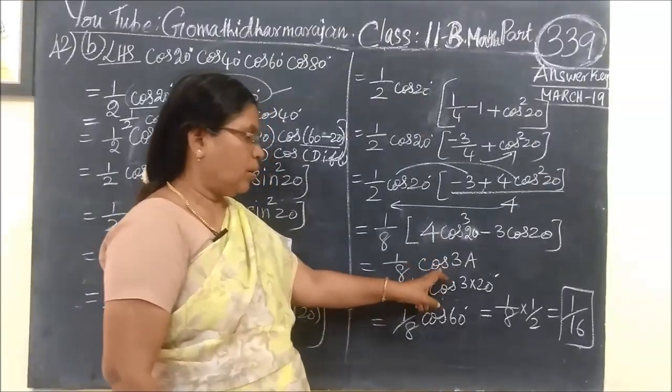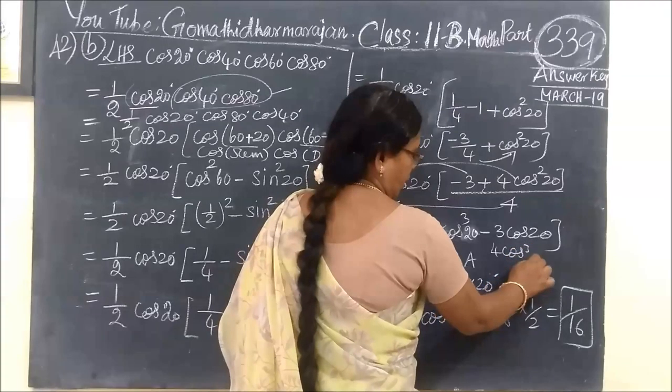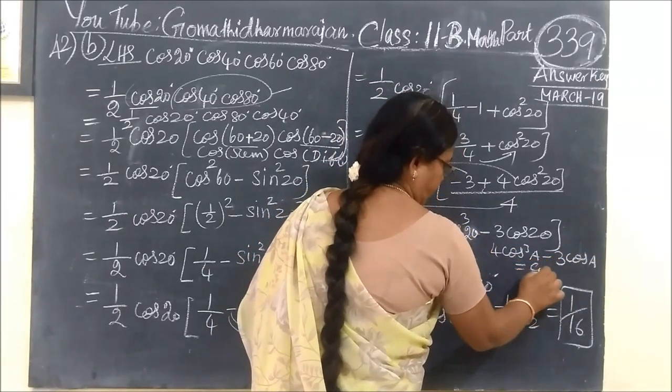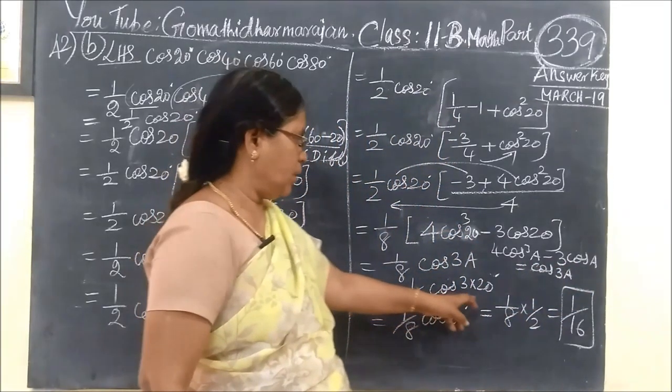This is the cos 3a formula: 4 cos cubed a minus 3 cos a equals cos 3a. Here, this equals cos 3 times 20 degrees.